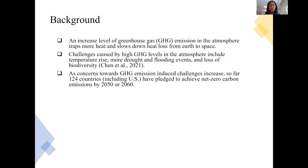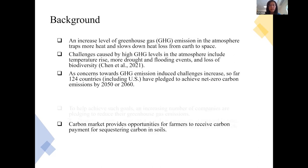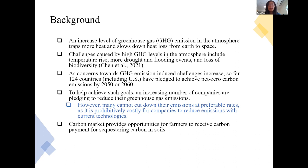As concerns toward GHG emissions continue to increase, more than 100 countries — including the United States — have pledged to achieve net-zero carbon emissions by 2050 or 2060. An increasing number of companies are pledging to reduce their greenhouse gas emissions as well. However, many cannot cut down their emissions at preferable rates. There are different markets: inset means they control their own emissions, and offset means they look for outside help.